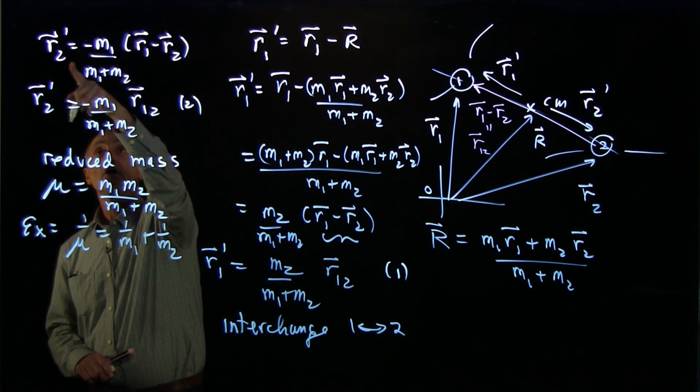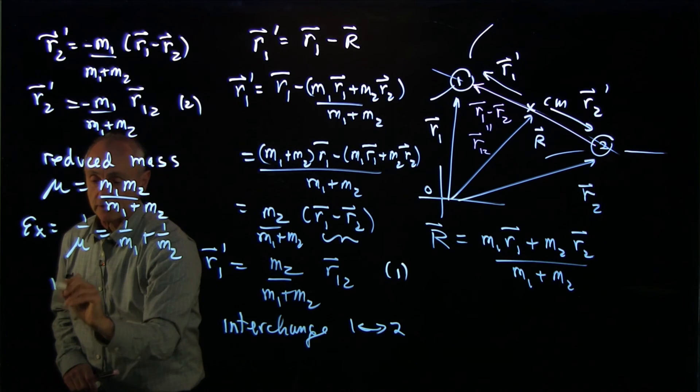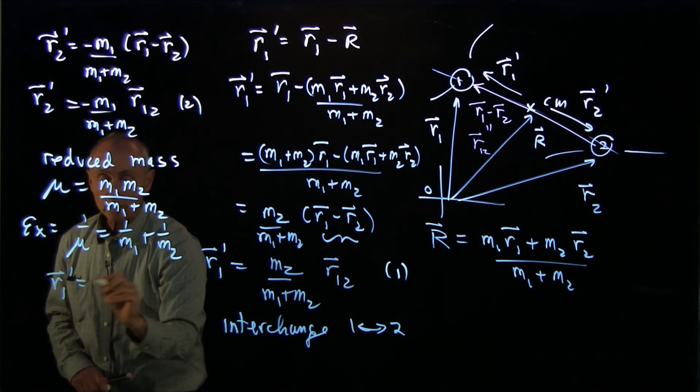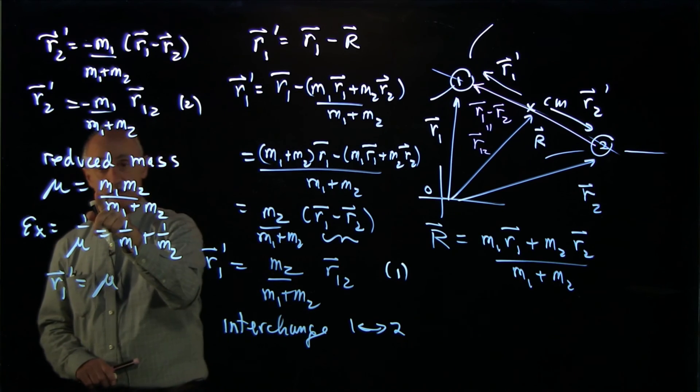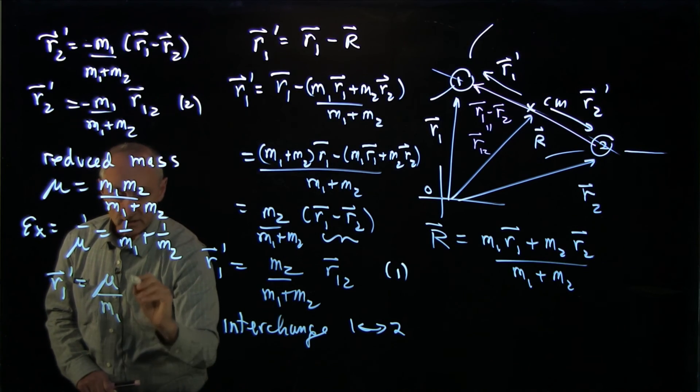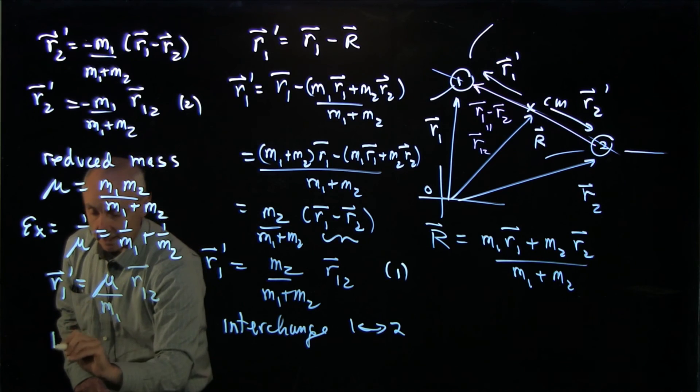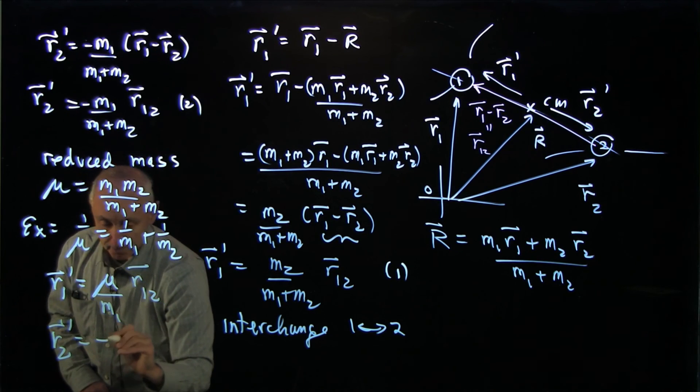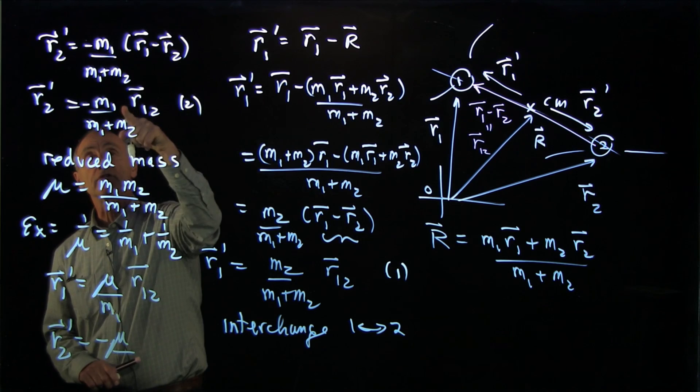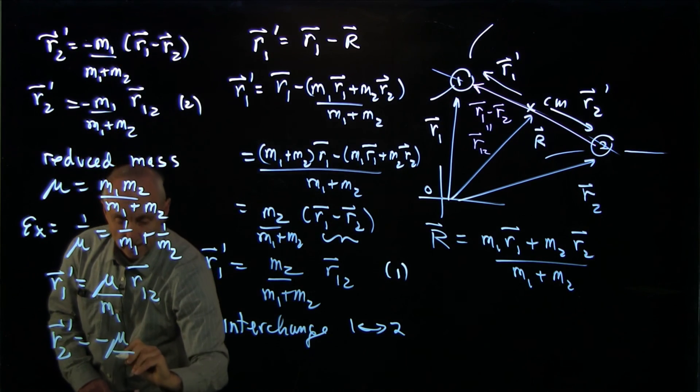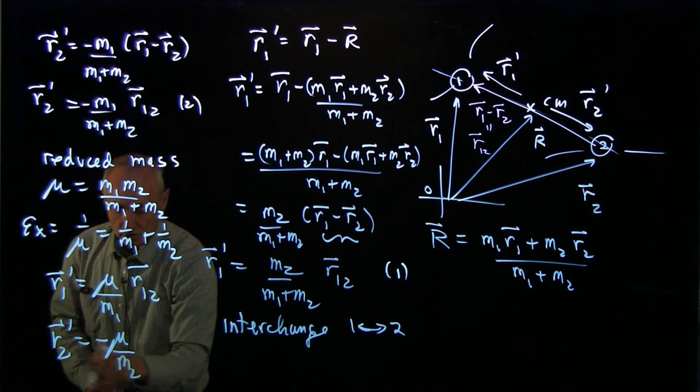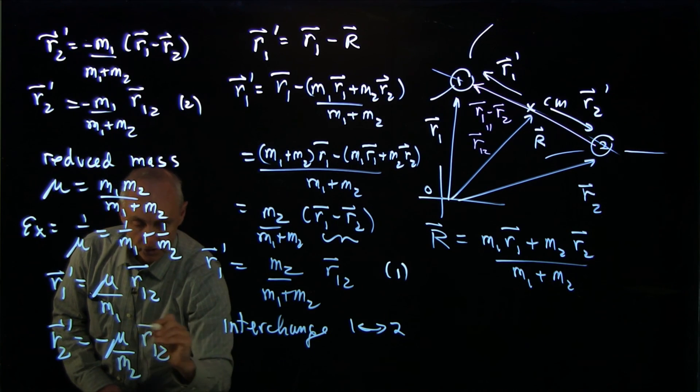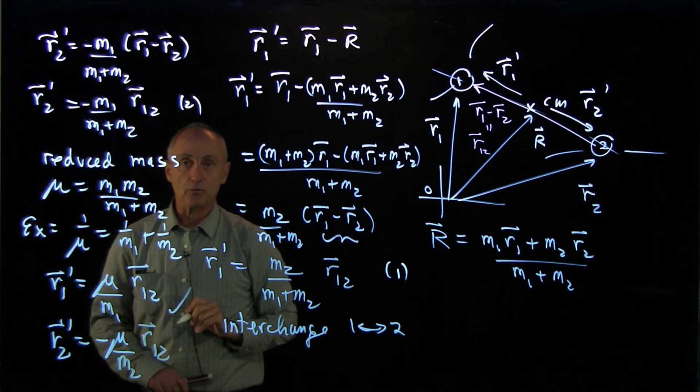Then I can write both of these vectors. This is our conclusion that r1 prime is the reduced mass. Notice we have an m2 here. So we have to divide by m1 times the vector r12. And r2 prime is minus the reduced mass. Again, we now have to divide by m2. You see this nice symmetry of m1 and 1, 2 and 2, r12. That's our key result.